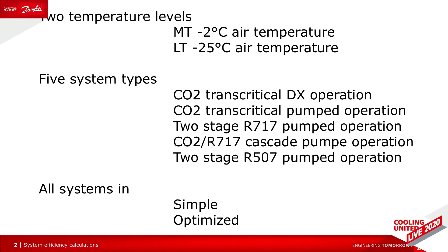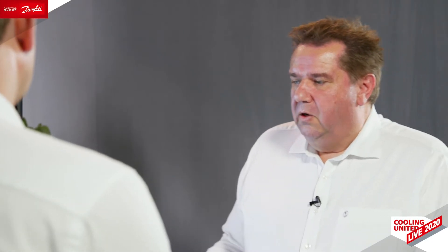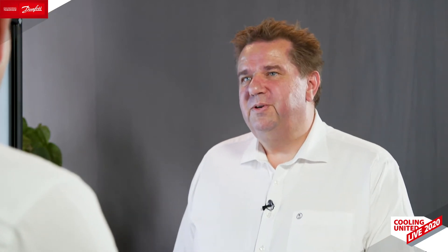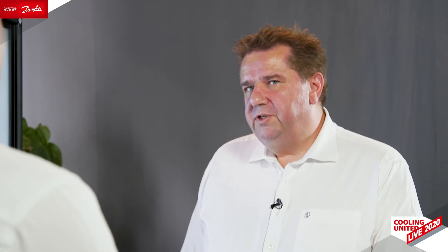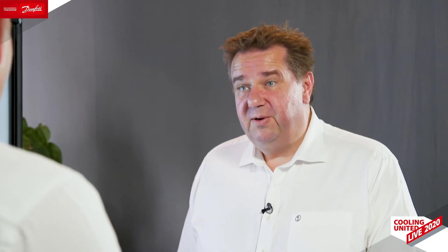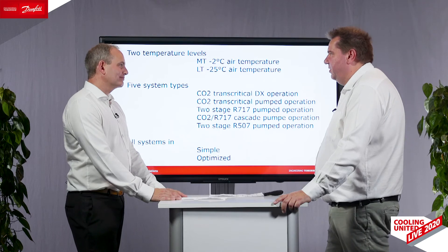We decided to model five different systems: CO2 transcritical in a DX operation mode; CO2 transcritical in flooded or pumped version; a two-stage ammonia system in pumped operation as it normally is; a CO2 and ammonia cascade, again with pumped; and finally, for a backwards comparison, a two-stage R507 also with pumped. All of the systems were calculated in a simple version — a bare-bone system, basically the cheapest that you could find and install.